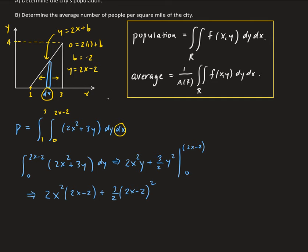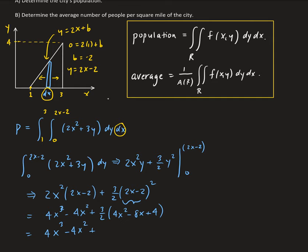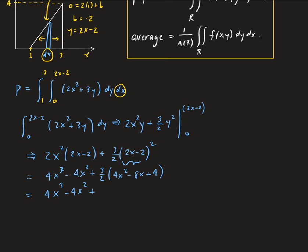Simplifying: 2x²(2x − 2) gives 4x³ − 4x². Then (3/2) times (2x − 2)² — expanding (2x − 2)² gives 4x² − 8x + 4 — so that contributes +6x² − 12x + 6. Combined, we get 4x³ − 4x² + 6x² − 12x + 6.